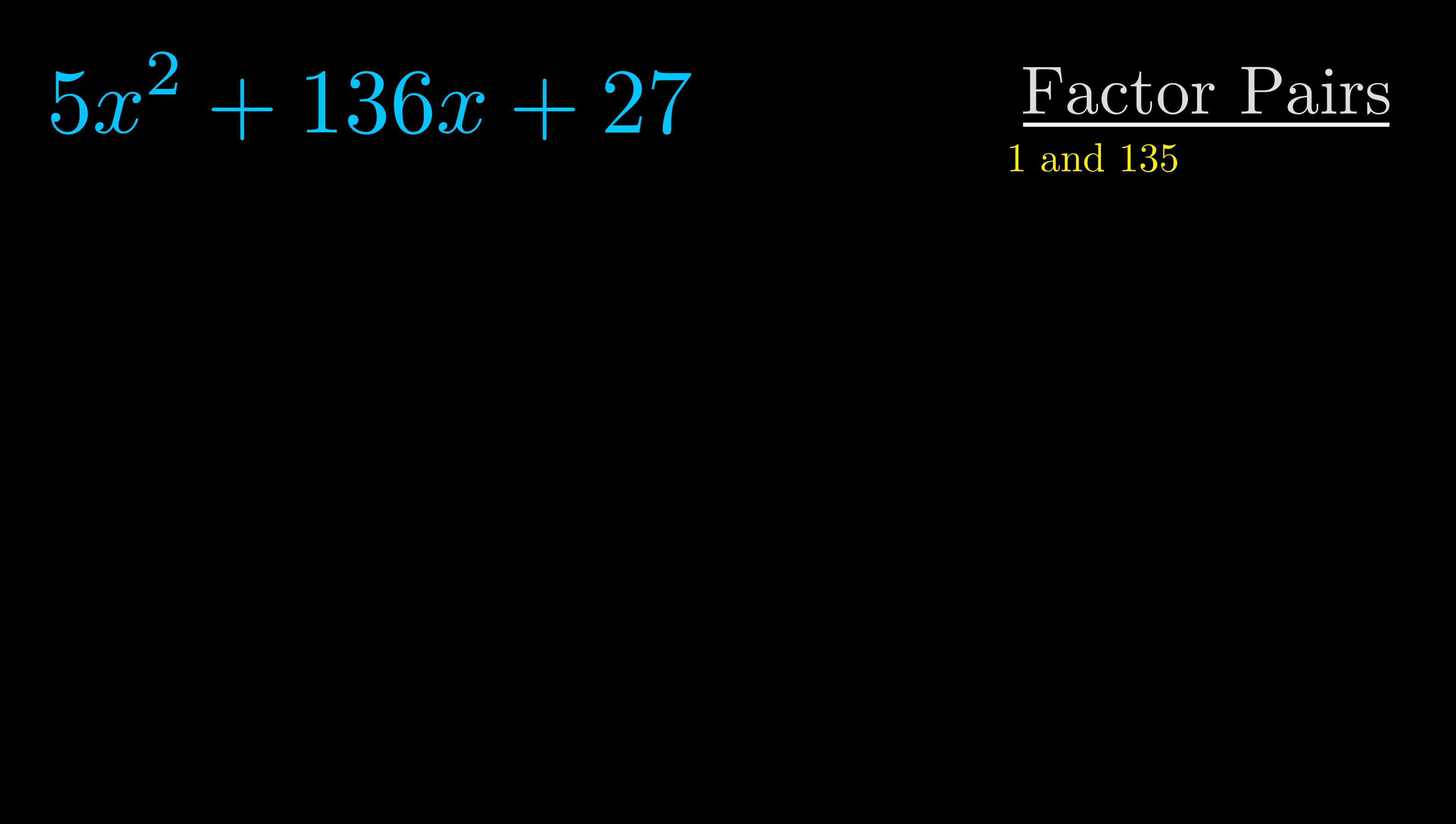Now once we have this factor pair what we want to do is use it to split up the b value.